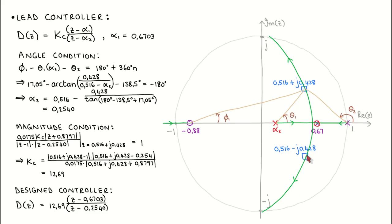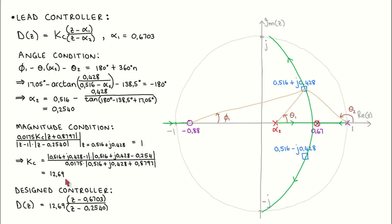To determine alpha2, we use the angle condition, which says that phi1 minus theta1 minus theta2 should equal 180 degrees plus an integer multiple of 360 degrees. After calculating the angles and solving for alpha2, we calculate alpha2 to be 0.254. The last step is to calculate the controller gain, for which we use the magnitude condition. The magnitude condition states that the magnitude of the loop transfer function at the closed loop pole should be equal to 1. After some manipulation, we arrive at a controller gain of 12.69.